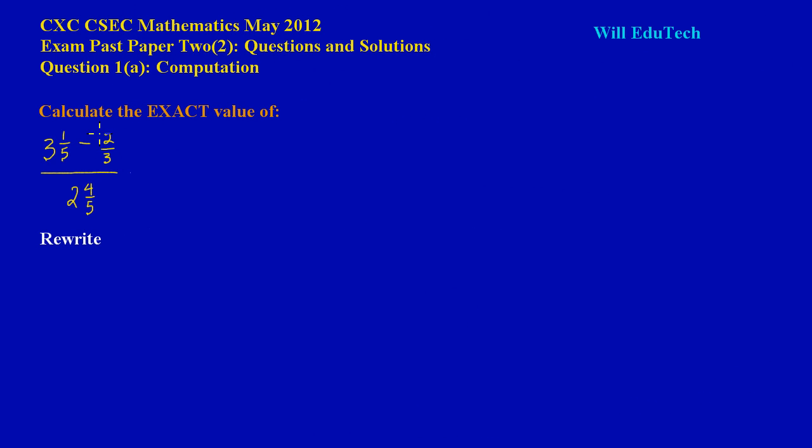Hey guys, nice having you in this video. We're going to be looking at question 1a on the May 2012 CSEC math exam past paper. Now here in question 1a, they're asking us to calculate the exact value of 3 and 1/5 minus 2/3 all divided by 2 and 4/5.